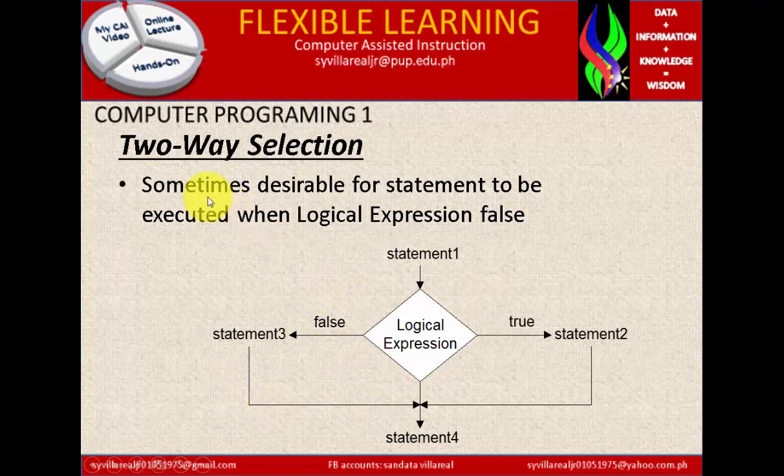This is what you call the two-way selection. If you choose true, then it will go to statement 2 and go to statement 4. If you choose false, it will go to statement 3 and it will go to statement 4.